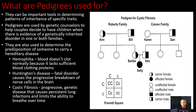So let's look at a couple of examples. First, let's look at hemophilia — this is where blood doesn't clot normally because it lacks sufficient blood-clotting proteins. People known as hemophiliacs are often called free bleeders because it's difficult for their blood to clot or to stop bleeding. In Huntington's disease, this is a fatal disorder that causes the progressive breakdown of nerve cells in the brain. We also have cystic fibrosis, which is a progressive genetic disease that causes persistent lung infections and limits the ability to breathe over time. So let's take a look at the pedigree for cystic fibrosis.